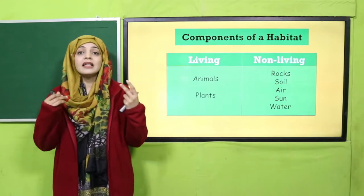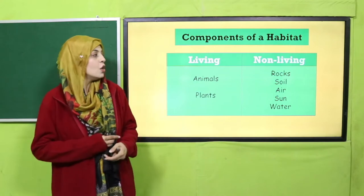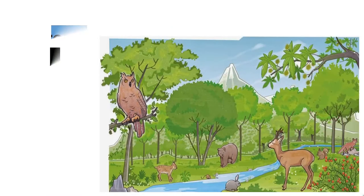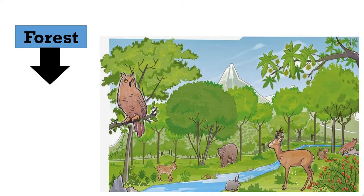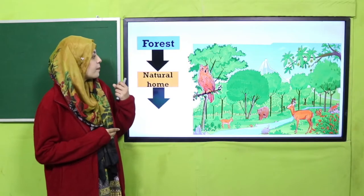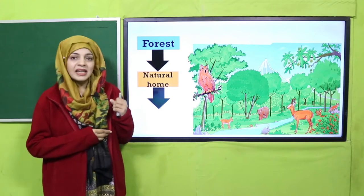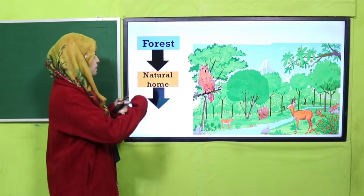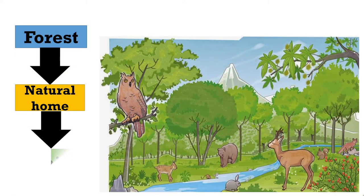Next you can see a forest habitat. This is a forest habitat with different animals — like an owl, a bear, a deer, a rabbit, a mouse, a fox, and a squirrel — along with different trees. So here you can see different types of animals and plants in a forest habitat. A forest is a natural home of many animals and plants.